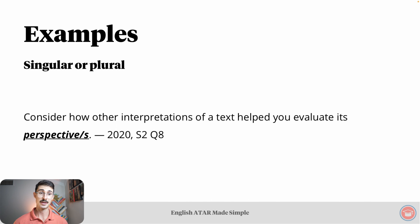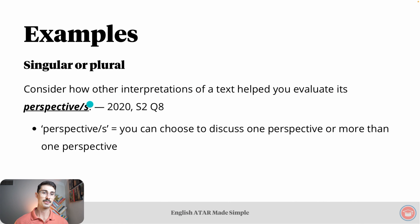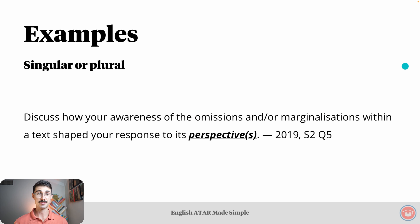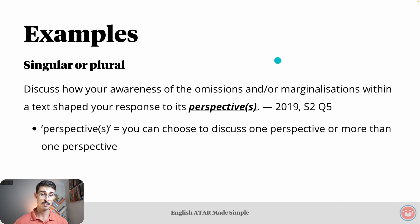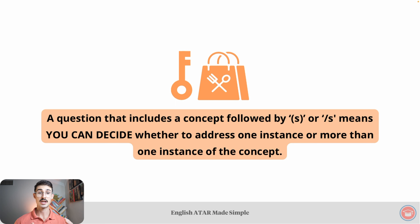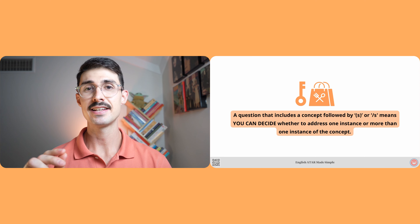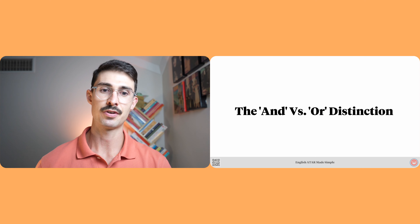Let's look at some singular-or-plural examples. 'Consider how other interpretations of a text helped you evaluate its perspective or perspectives.' The forward slash between the 'e' and the 's' means you can choose to discuss one perspective or more than one. Similarly: 'Discuss how your awareness of the omissions and/or marginalisations within a text shape your response to its perspective or perspectives.' The brackets around the 's' mean, like the last question, you can choose to discuss one perspective or more than one. Key takeaway: a question that includes a concept followed by 's' in brackets or forward slash 's' means you can decide whether to address one instance or more than one instance of the concept.